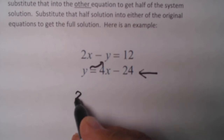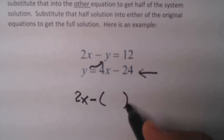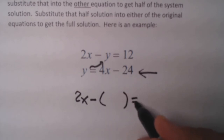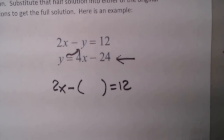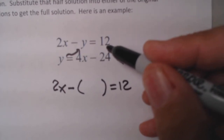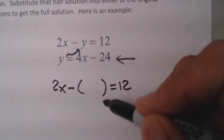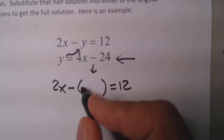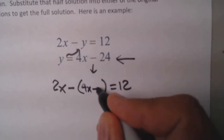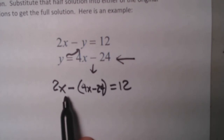Let me rewrite the first equation: 2x minus — I'm going to replace the y, so put a set of parentheses here to be able to put the value for y — and then it equals 12. So what we've done is rewritten the first equation, the one we're going to substitute into, and where the variable y is, I made a set of parentheses. What are we going to substitute? Exactly what y equals, which is 4x minus 24. Now notice this is an equation with just one variable x, so you can solve for x, and that will give us the first half of our solution.